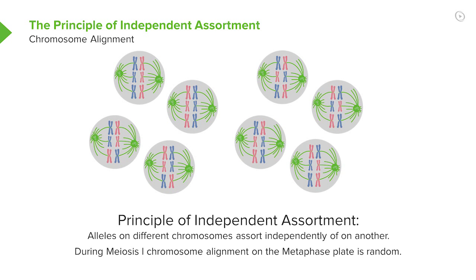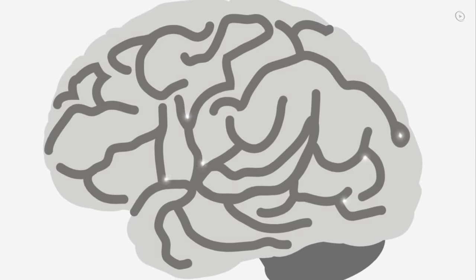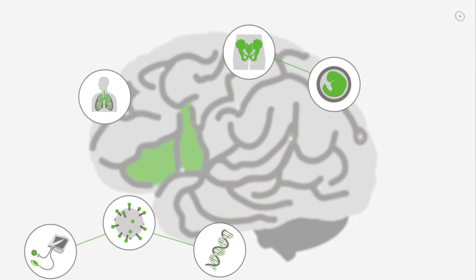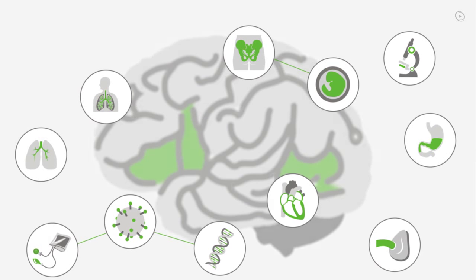Each pair segregates from each other independently of the next pair because they align randomly on the metaphase plate — we could have all the blue ones on one side, all the red ones on the other side, or some shuffling of that same layout where we're just having the chromosomes separate from each other.